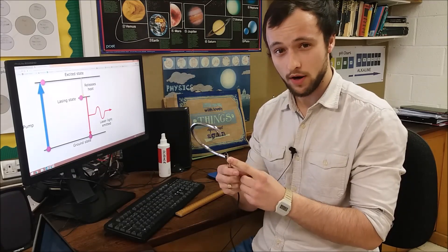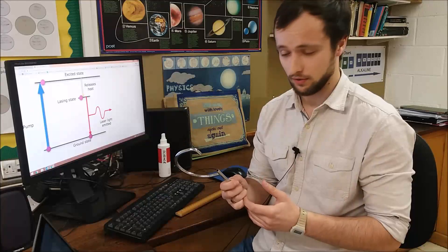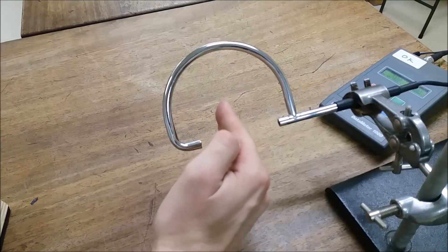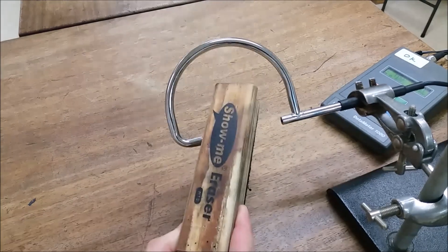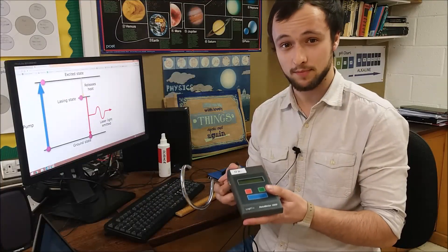The lightgate has an infrared beam going from one end to a detector on the other. When the beam is blocked, we can set up the beepy box to tell us how long that beam has been blocked.